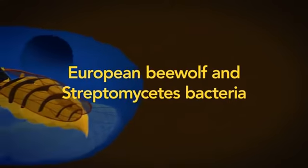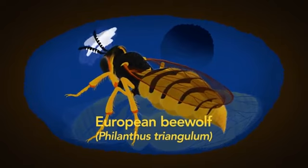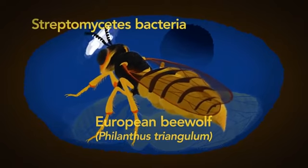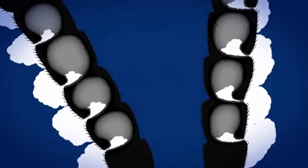Before the female European bee wolf lays her eggs, she smears a layer of bacteria on the ceiling of her warm, damp, underground brood chamber. These bacteria, which she grows on her antennae, make a cocktail of antimicrobial chemicals that will protect her young offspring.